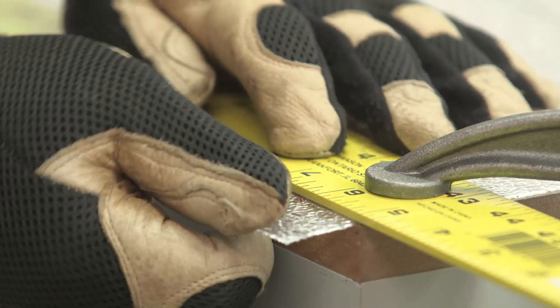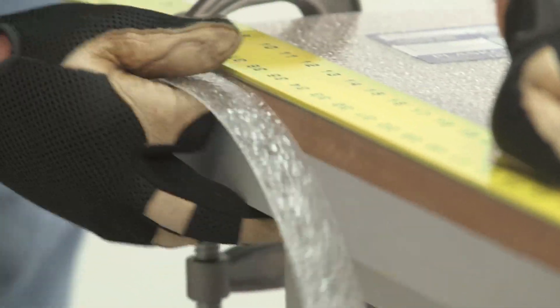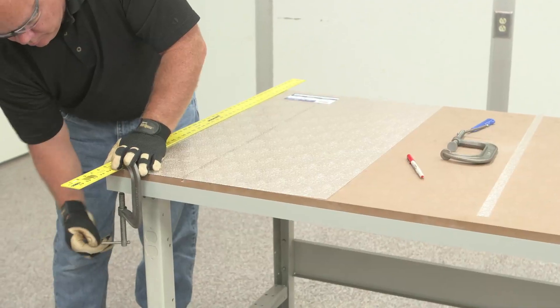Next, begin to snap the panel along the cut line. When not cutting along the edge of a workbench, place cardboard beneath the lighting panel to protect the work surface.